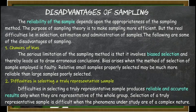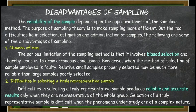The number one disadvantage of sampling is the chances of bias. The serious limitation of the sampling method is that it involves biased selection, and thereby it is asked to draw erroneous conclusions. Bias arises when the method of selection of sample employed is faulty. Relatively small samples properly selected may be much more reliable than large samples poorly selected.